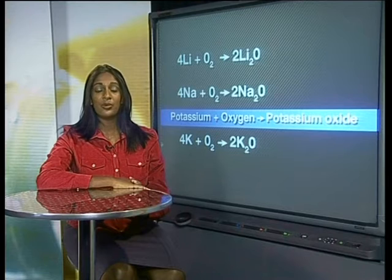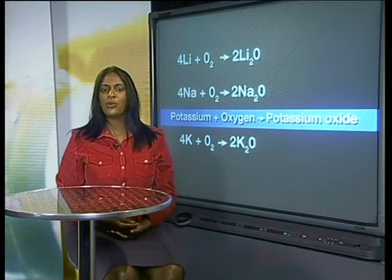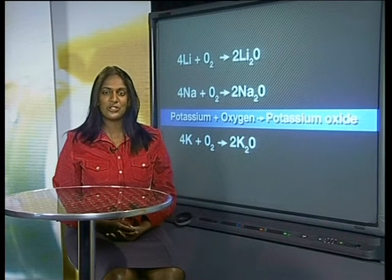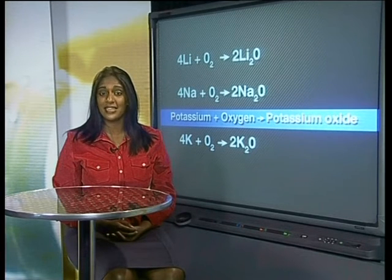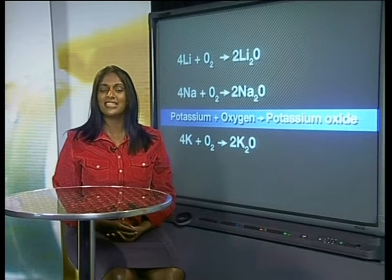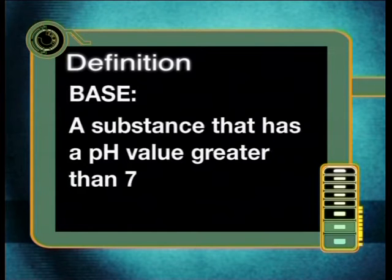To do this, we will test their solubility — in other words, we will check whether they dissolve completely in water or not. We will also test the solution to determine whether it is acidic or basic. Before we start our experiments, I would like to remind you what the terms acid and base mean. An acid is a substance that has a pH value less than 7, while a base is a substance that, when dissolving in water, has a pH value greater than 7.